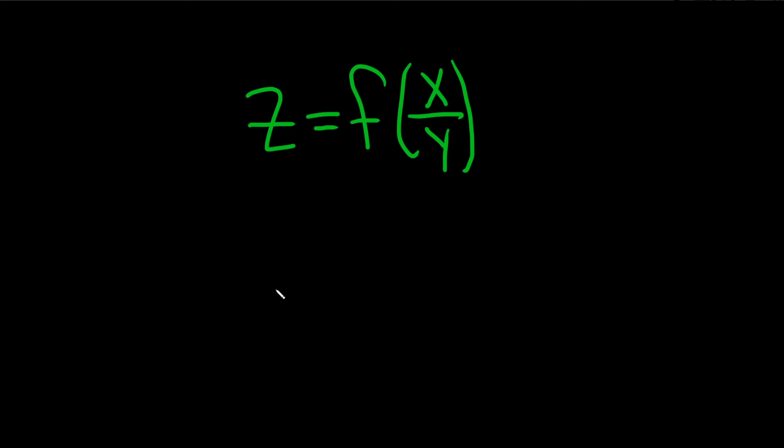In this problem we have z equals f of x over y and we're going to find two things. We're going to find del z del x and del z del y. So del z del x is the partial with respect to x and del z del y is the partial with respect to y.